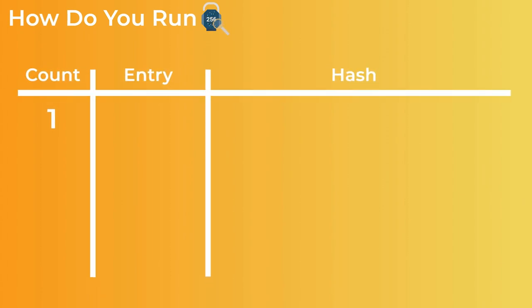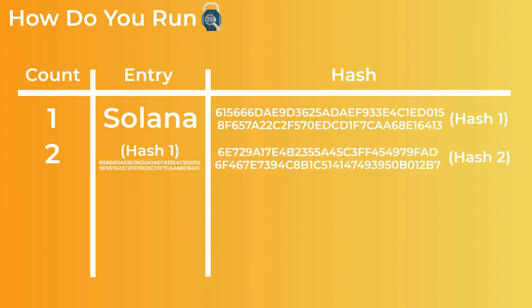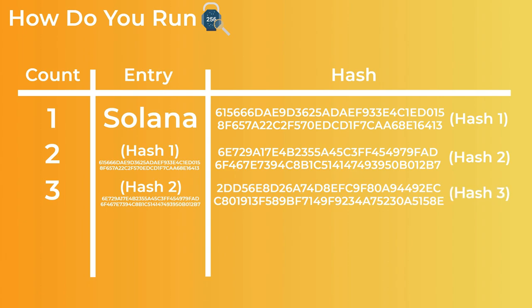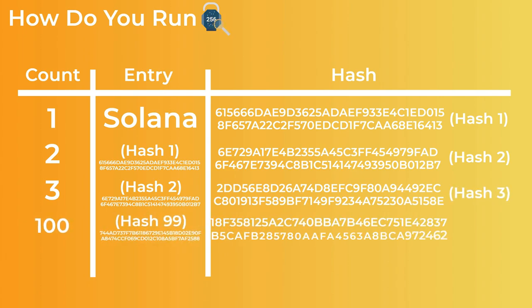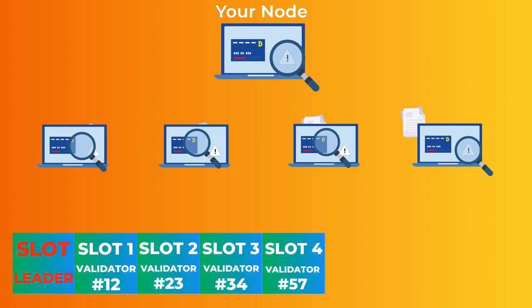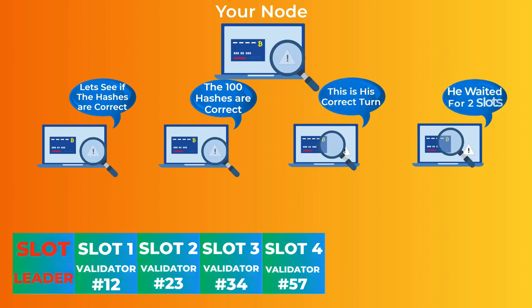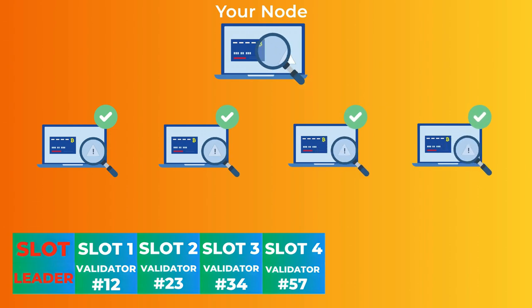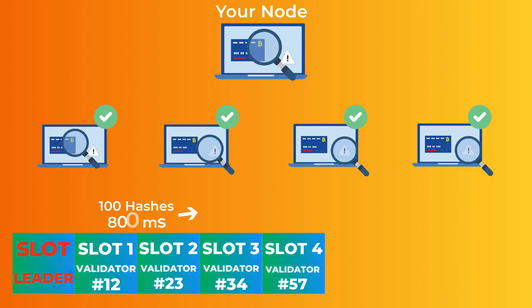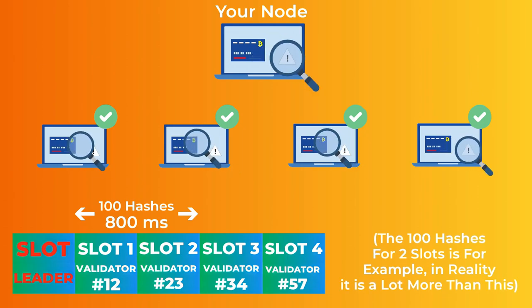To run the hash function, you start with any random input like "Solana" and get its hash — call it Hash 1. Then you put Hash 1 into the hash function again to get Hash 2, and repeat to get Hash 3, and so on. It will take some time to do this 100 times. When you produce a block, you give the 100 generated hashes to the validators to prove you waited your turn. The validators then recalculate the hashes to verify they are all correct. Generating 100 hashes takes about the duration of two slots, roughly 800 milliseconds.